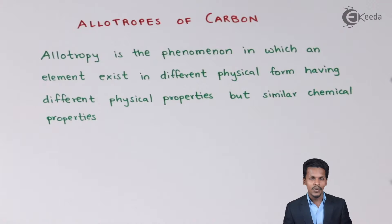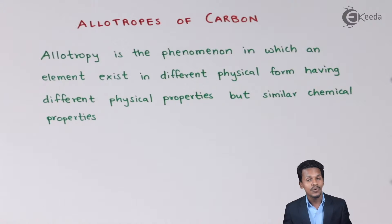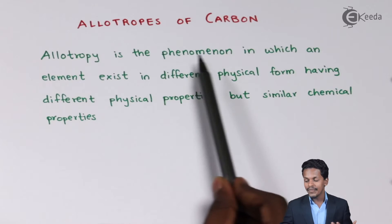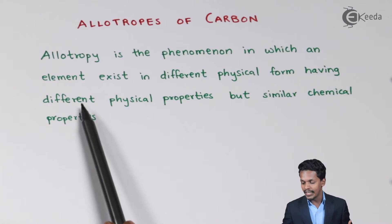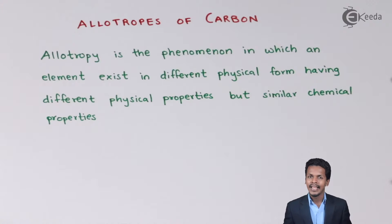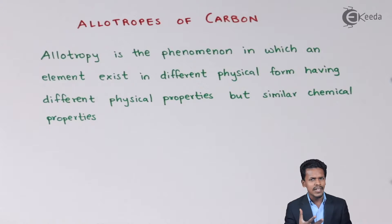Before understanding the allotropes of carbon, it is essential to understand what allotropy is. Allotropy is the phenomenon in which an element exists in different physical forms, having different physical properties, but with similar chemical properties. The different allotropes differ in their physical properties, while all allotropes of an element share the same chemical properties.